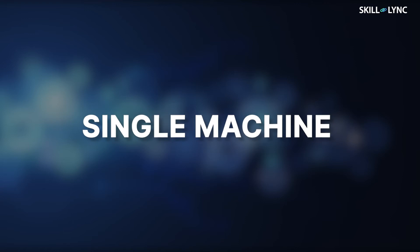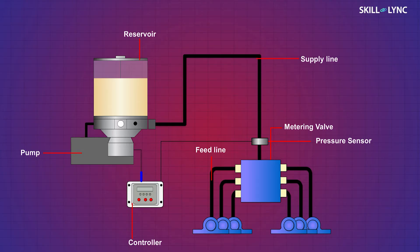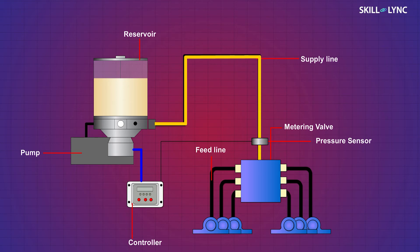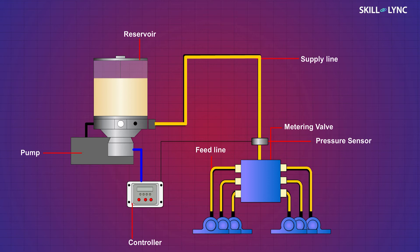When the controller sends a signal to the pump, the pump pumps the lubricant from the reservoir to the metering valve through the supply line. When sufficient pressure is attained, the metering valve delivers the lubricant, which gets passed through the feed line for lubricating the surfaces. Once sufficient pressure is developed in the supply line, the controller shuts off the pump.